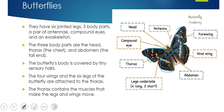Then we have the two back wings, or hind wings. You can't see the legs because they are underneath, but they're all attached to the thorax because the thorax contains the muscles that make the legs and wings move.